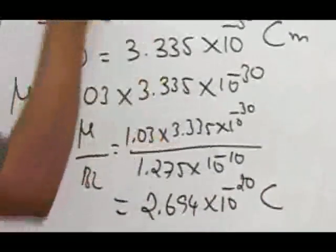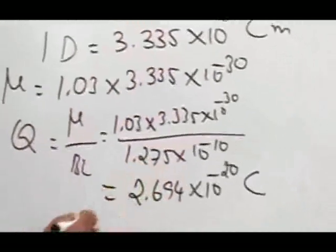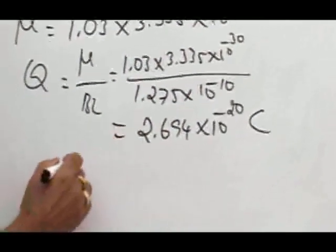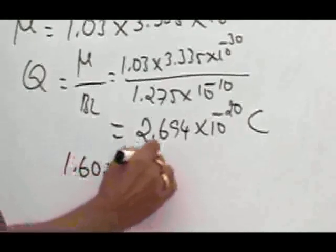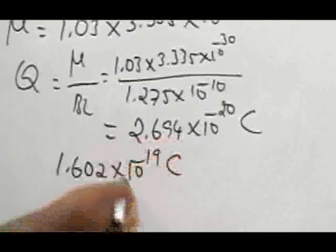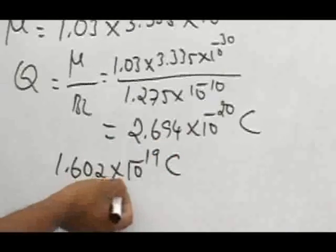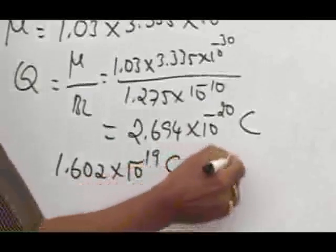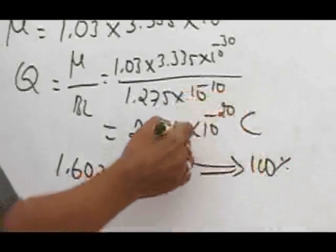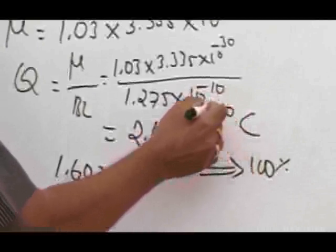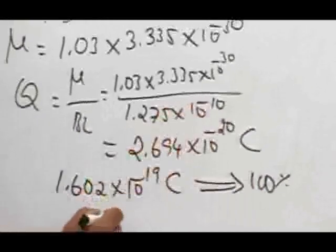Now how to calculate percentage ionic character? We know that the unit charge is 1.602 × 10^-19 coulomb. If this is the charge separation, then percentage ionic character will be 100%. Therefore, for 2.694 × 10^-20, we have to calculate.